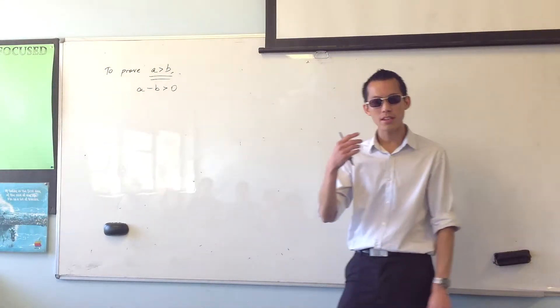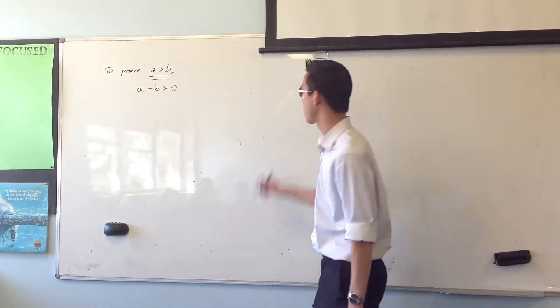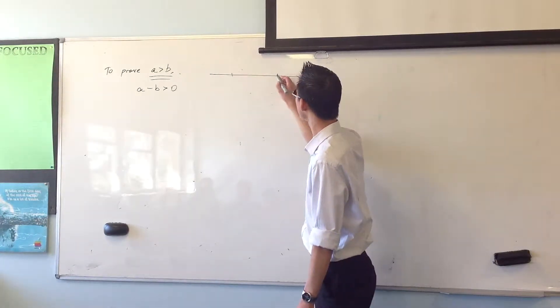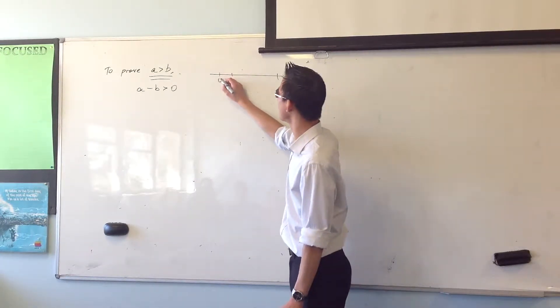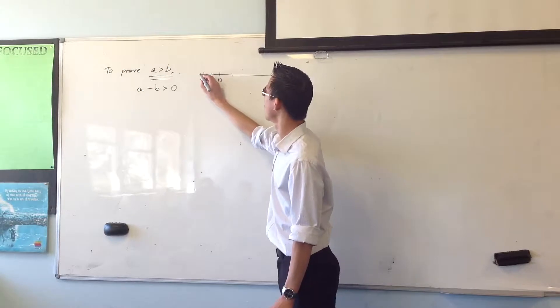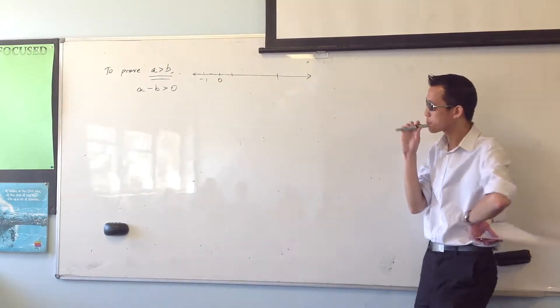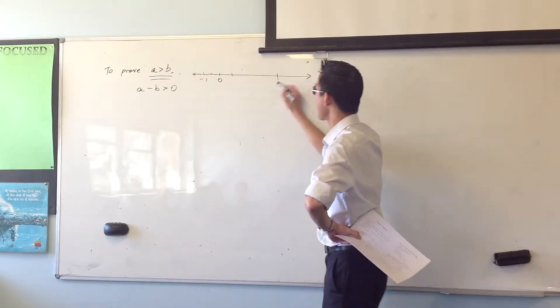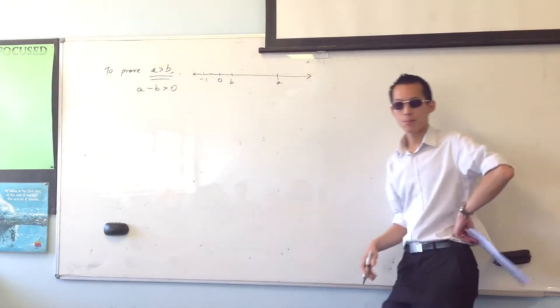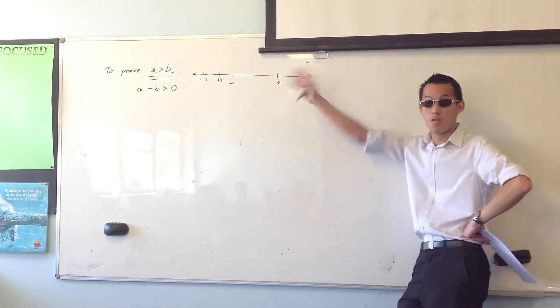But what does this mean geometrically? Let me think about it by putting these on a number line. Now if you've got 0 over here, minus 1 over here, going that way, so your negatives and your positives. I want to prove that a is bigger than b. Another way of saying that is that a is to the right of b.